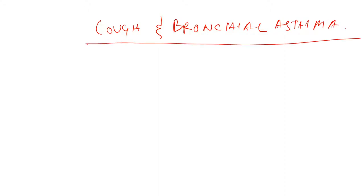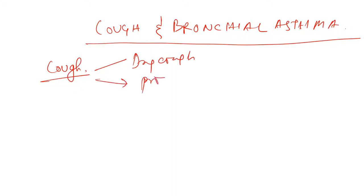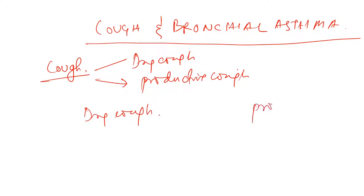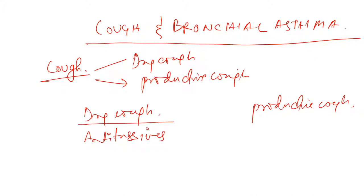There are two types of cough: dry cough and productive cough. The treatment for dry cough is different and for productive cough it is different. Dry cough is treated by drugs known as anti-tussives, and productive cough is treated by mucokinetics — drugs that help move the mucus.